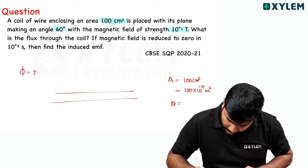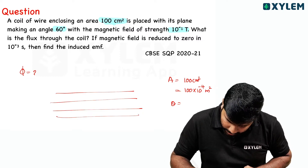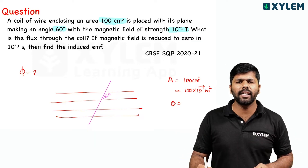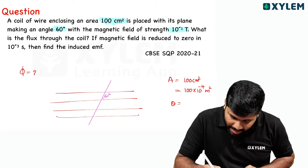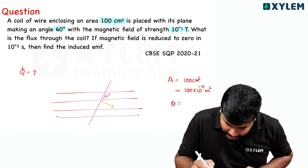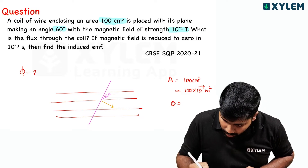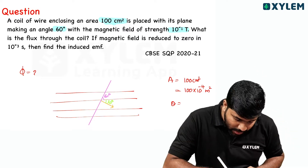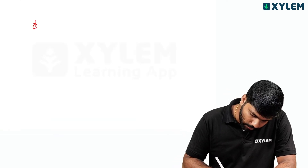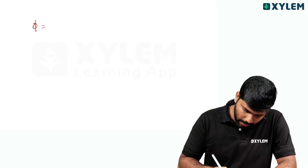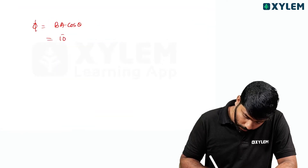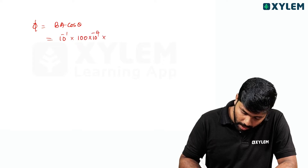The magnetic field makes 60° with the plane of the coil. The area vector is perpendicular to the plane, so the angle between the area vector and the magnetic field is 30°. So theta equals 30 degrees. The flux equation: Φ = BA cosθ = 10⁻¹ into 100 into 10⁻⁴ into cos 30°.